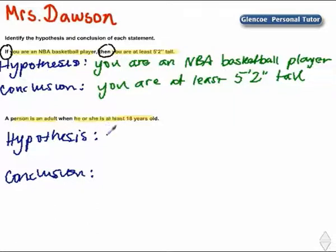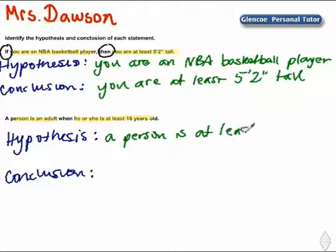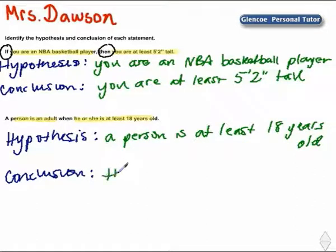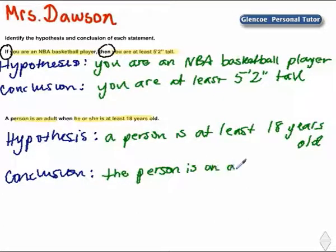So the hypothesis is: a person is at least 18 years old. And the conclusion: the person is an adult. So if a person is at least 18 years old, then the person is an adult.